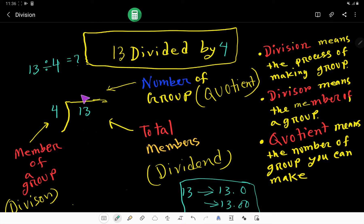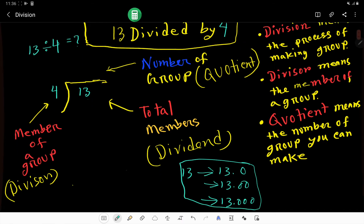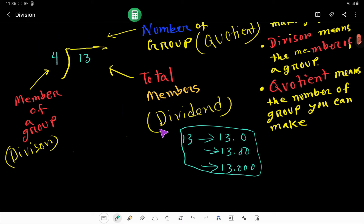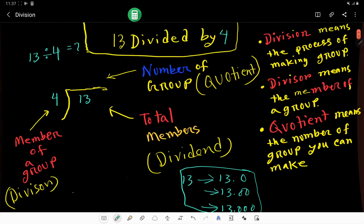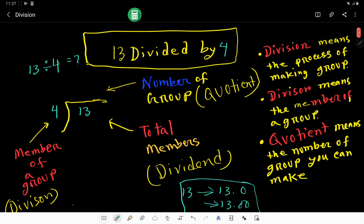We can rewrite this dividend as 13, 13.0, 13.00, or 13.000. After the decimal point, if I add 0, it doesn't contain any value. Here we have 13 people and we have to make groups. We need the multiplication table of 4.